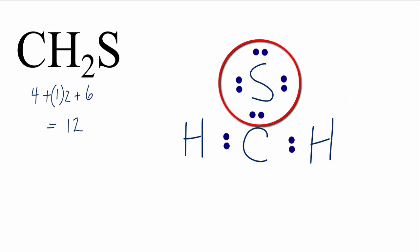Sulfur has an octet, the hydrogens are okay, but that carbon only has six valence electrons, so that's not going to work. What we can do, though, is share two of the valence electrons around the sulfur with the carbon to form a double bond, and that'll look like this.